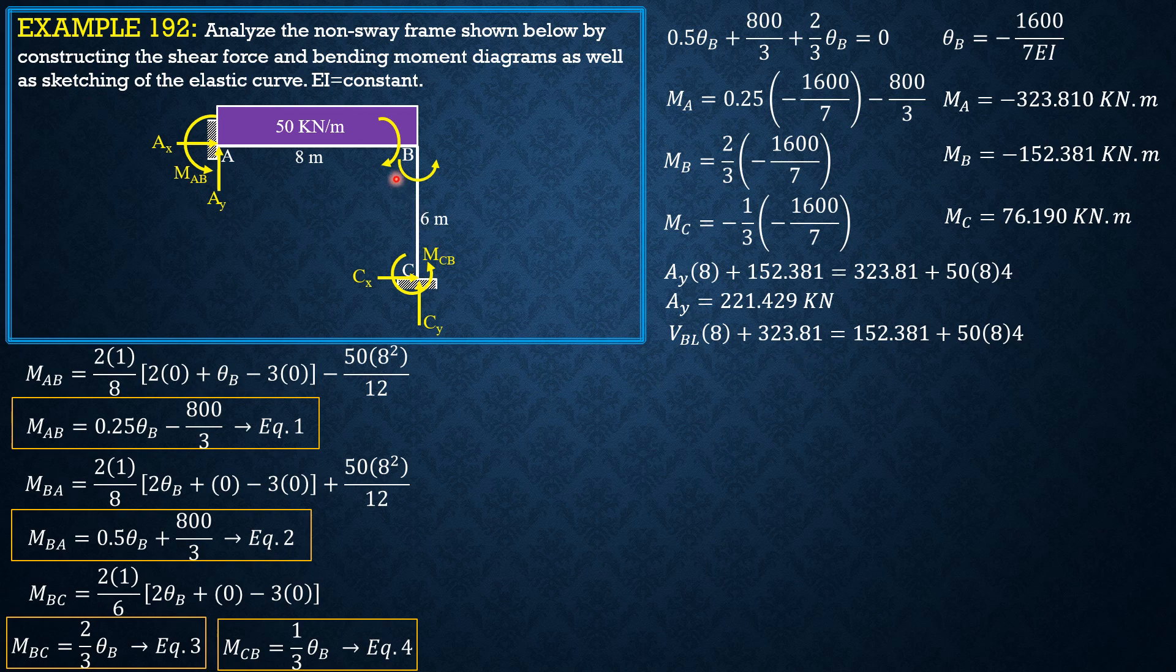Equals moment MBA, which is 152.81, plus the moment of the load, 50 times 8 times 4. So shear at B just to the left is 178.571. This is also Cy.